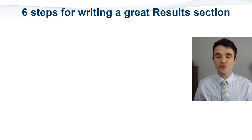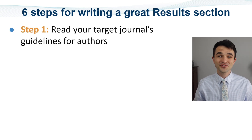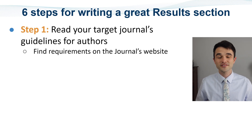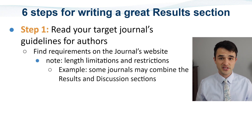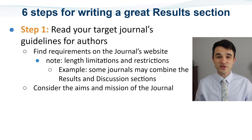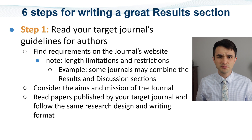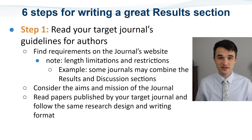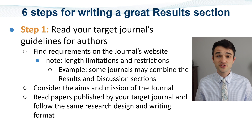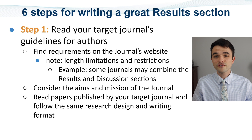The six steps for writing a great results section. Step 1: Read your target journal's guidelines for authors. Find the specific requirements for the results section in the instructions for authors. Note length limitations and restrictions — for example, some journals may combine results and discussion sections into one single section. Consider the aims and missions of the journal to best align your results with the journal's goals. Read some papers published by your target journal on a similar topic, or papers that follow the same research design and writing format. By following the approach of previously published papers, you can feel confident that your approach meets the standards of your target journal.